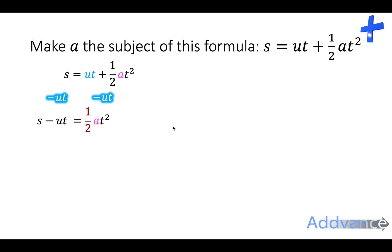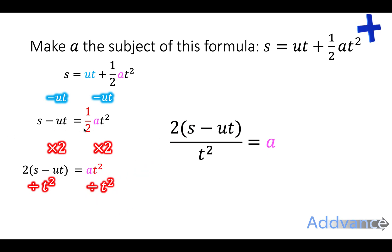Now I want to get rid of that half. The opposite to halving something is multiplied by 2. And so I get 2 times s minus ut equals at squared. I now want to get rid of that t squared to get a on its own. And it's multiplying the a by t squared. So I divide both sides by t squared. And I get 2 times s minus ut over t squared equals a. And that is the final answer.